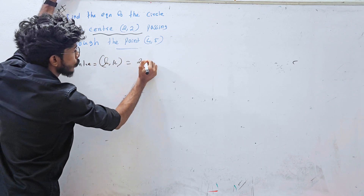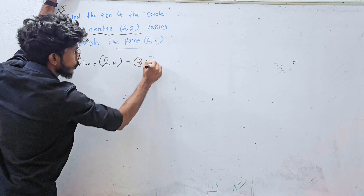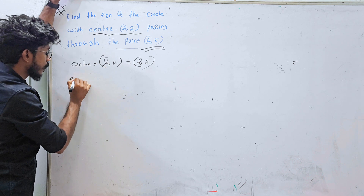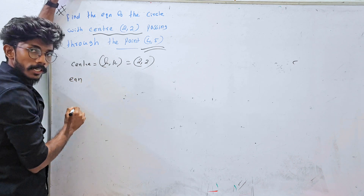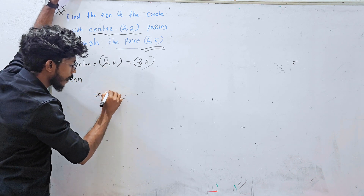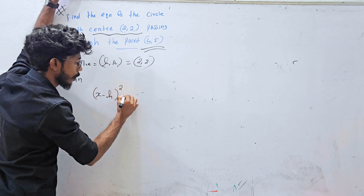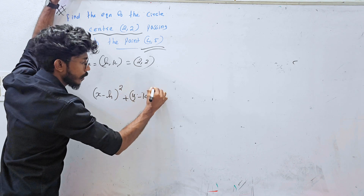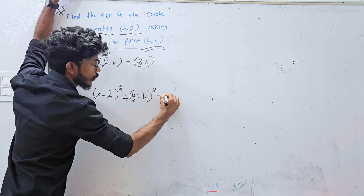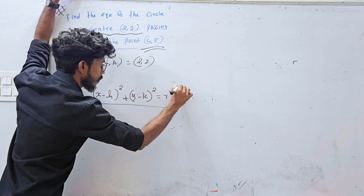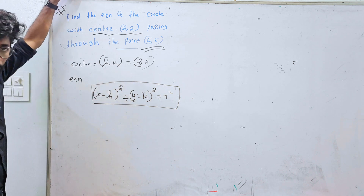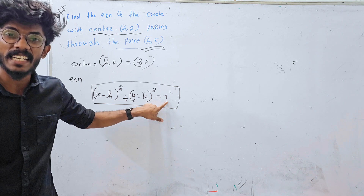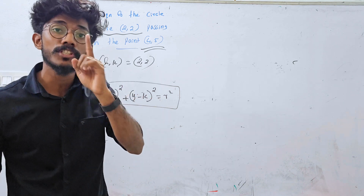Find the equation of the circle with center h, k equal to 2, 2, and passing through the point 4, 5. The general equation of a circle is: x minus h, the whole square, plus y minus k, the whole square, equal to r square. We have center h, k and we want to find the radius.